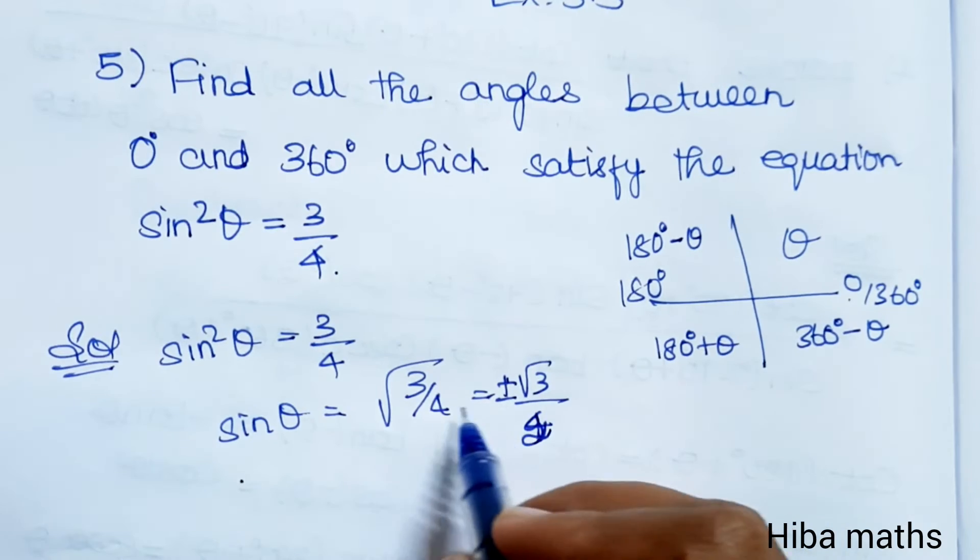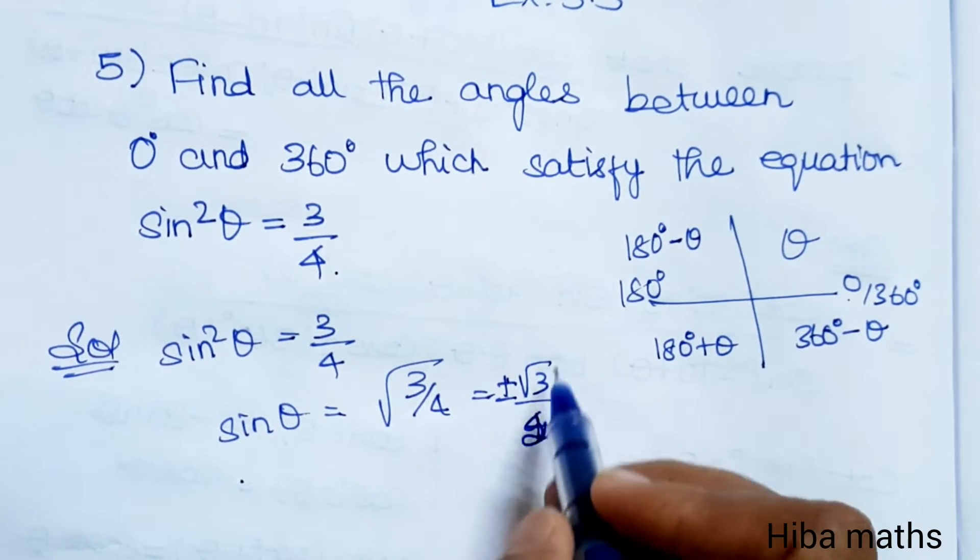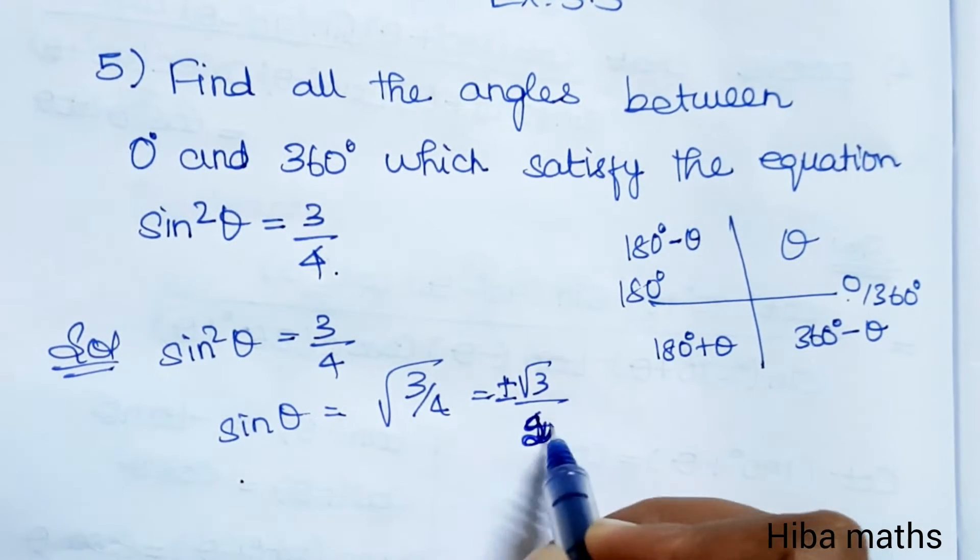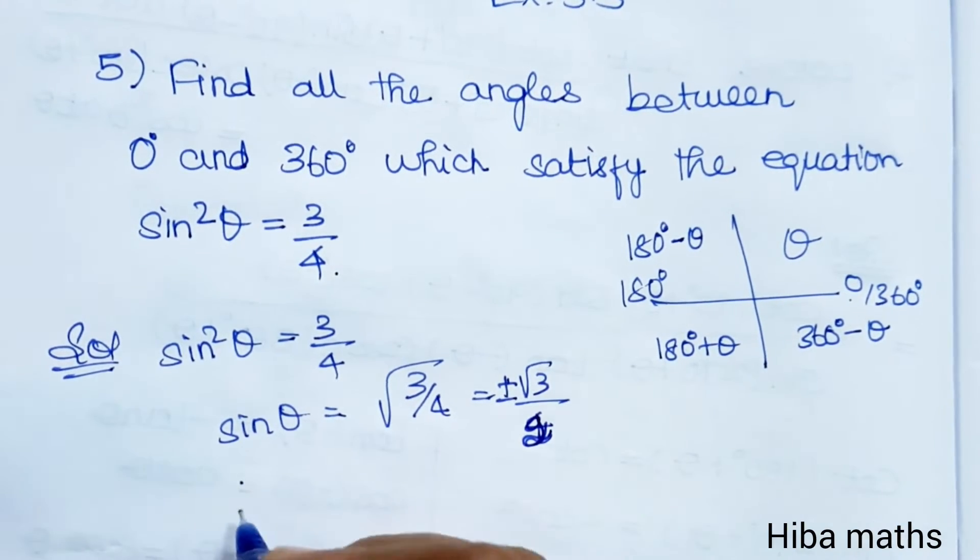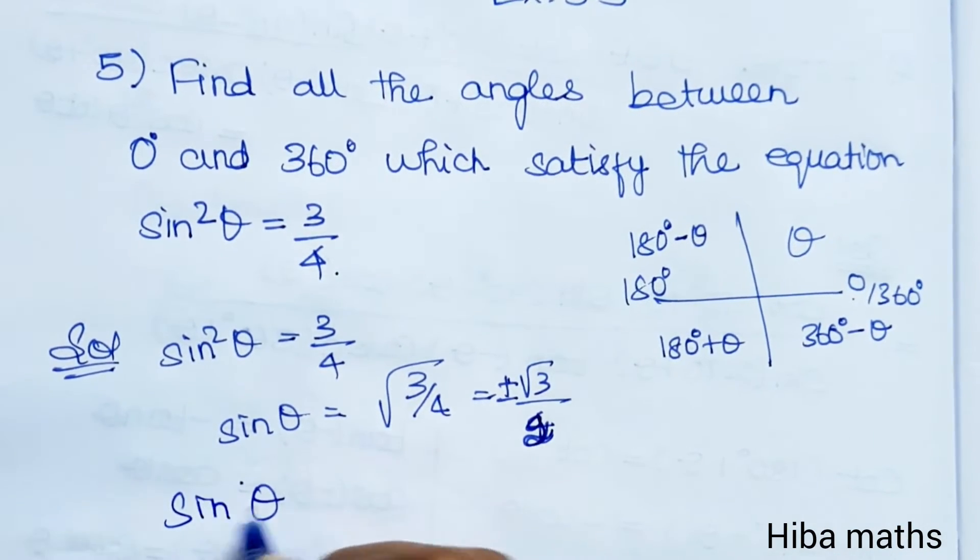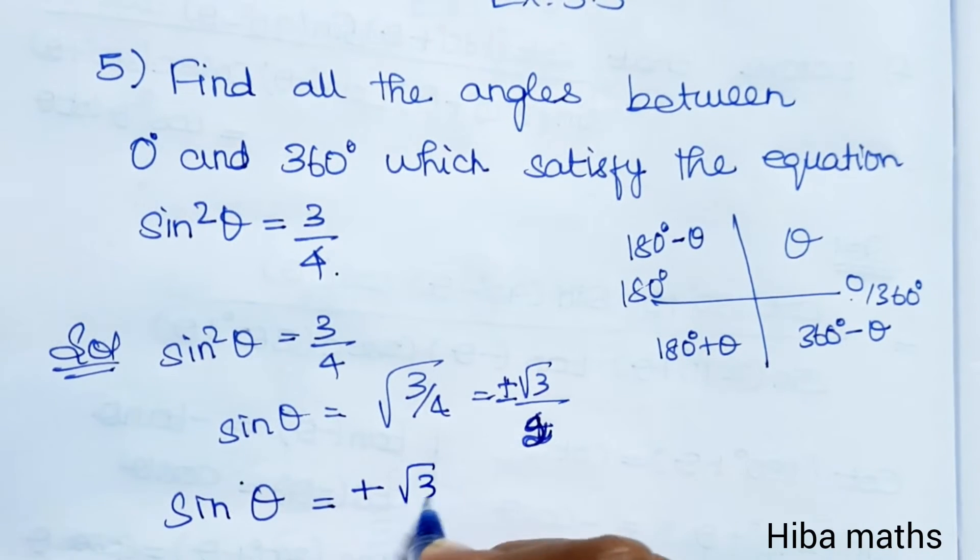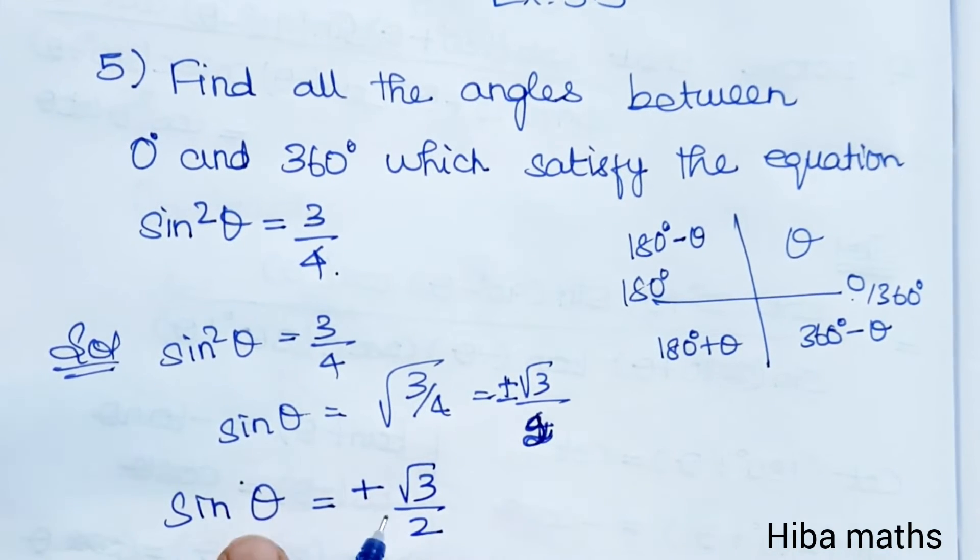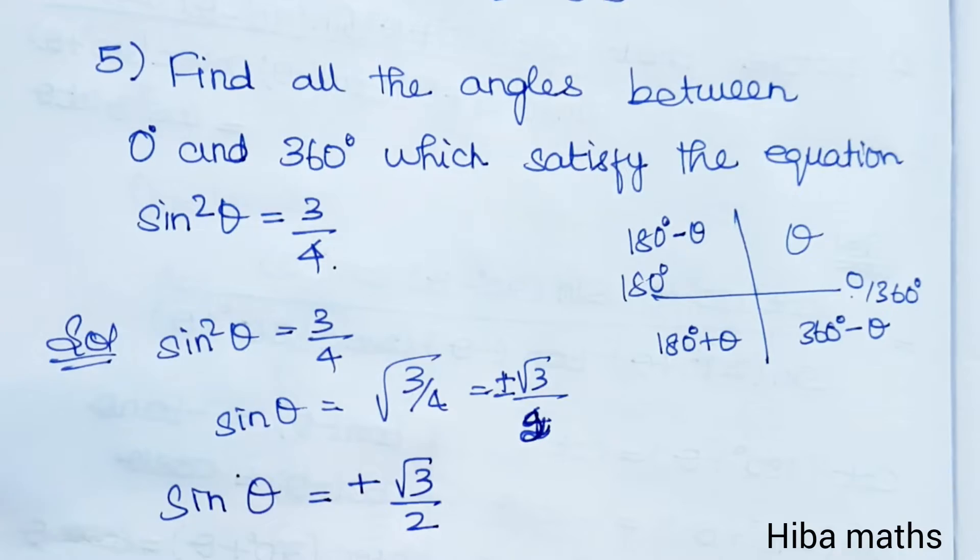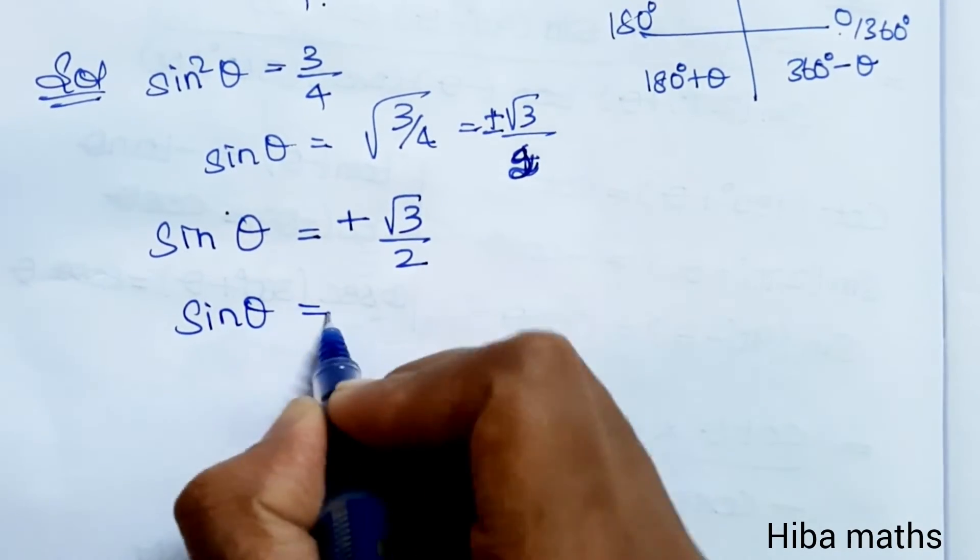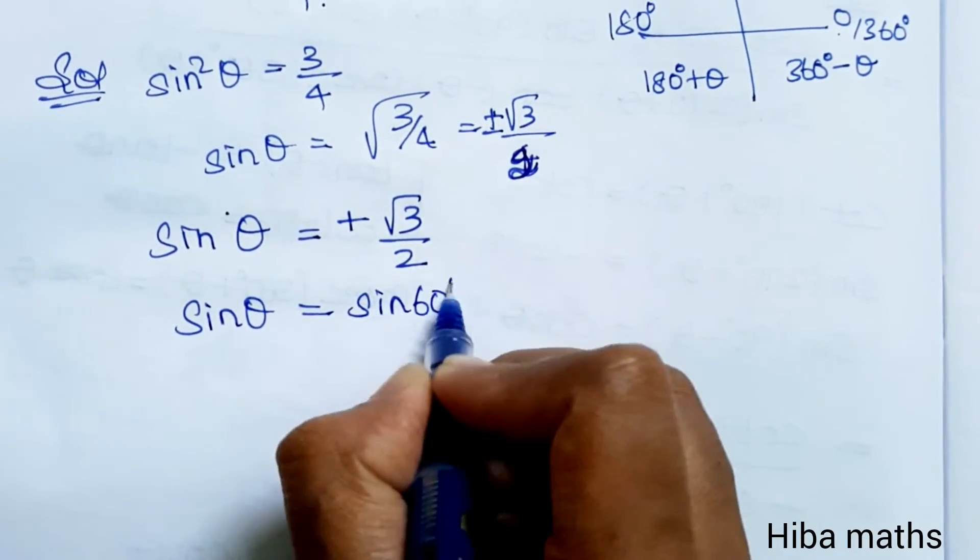Taking the square root of 3 by 4, sin theta equals root 3 by 2. Sin theta equals sin 60 degree, so theta value is 60 degree.